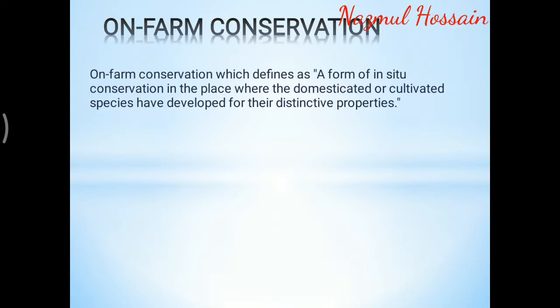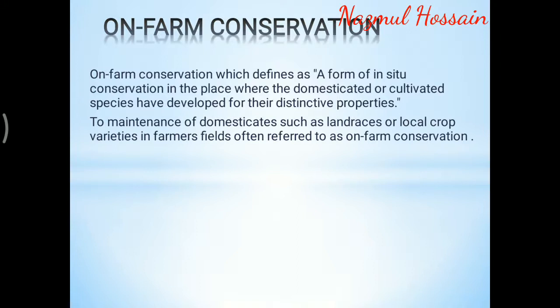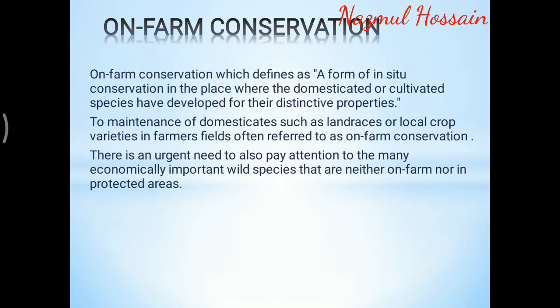On-farm conservation is defined as a form of in-situ conservation in the place where domesticated and cultivated species have developed for their distinctive properties. It involves maintenance of domesticated species such as land races or local crop varieties in farmers' fields, often referred to as on-farm conservation. There is an urgent need to also pay attention to the many economically important wild species that are neither on-farm nor in protected areas.